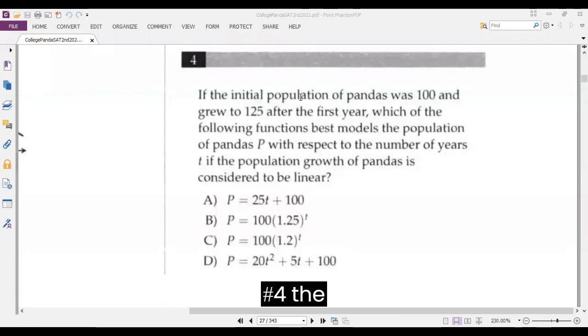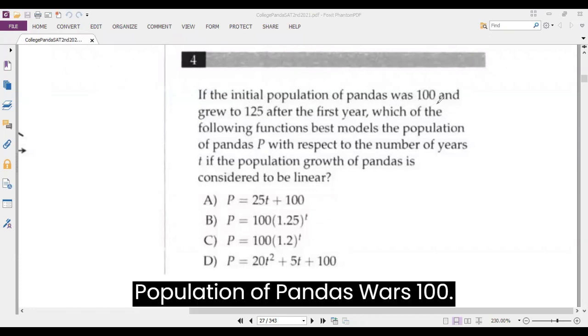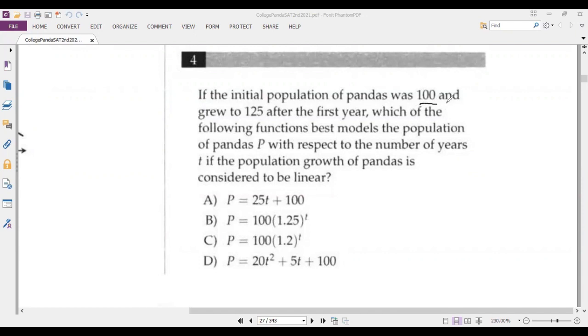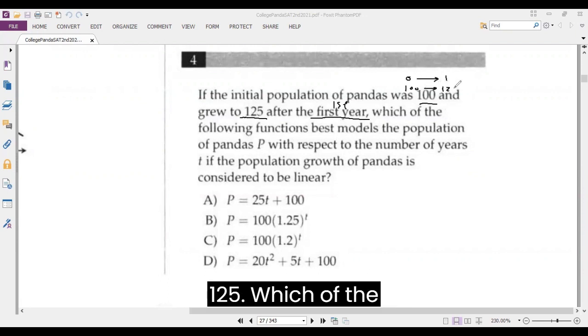Number four. If the initial population of pandas was 100 and grew to 125 after the first year, okay. Now we have first year and growth from 0 to 1 to be from 100 to 125.